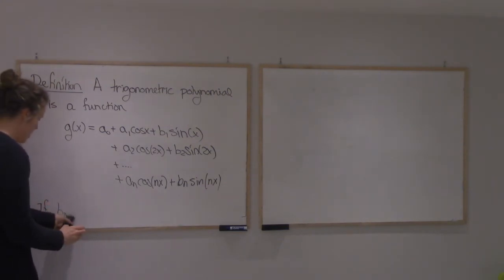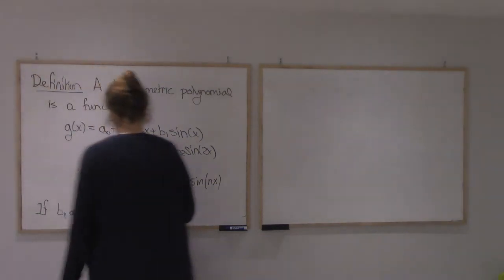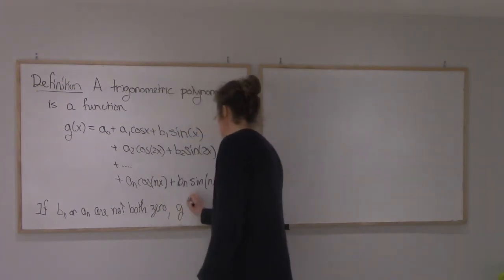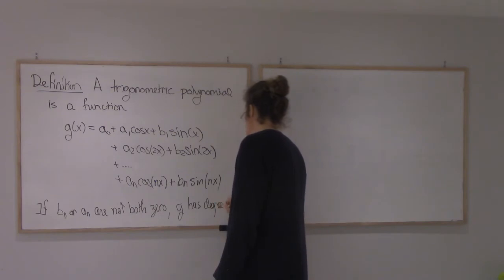Either bn or an are not zero, and we'll say that g has degree n.